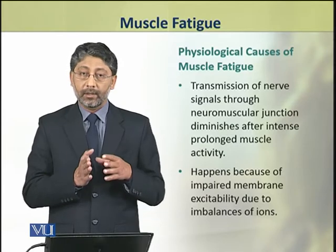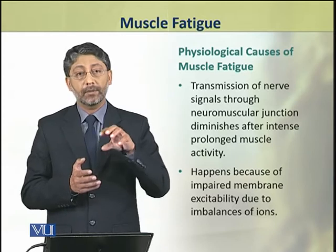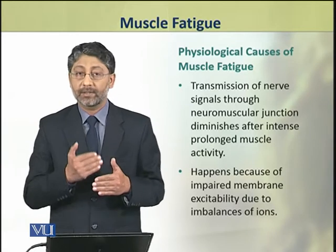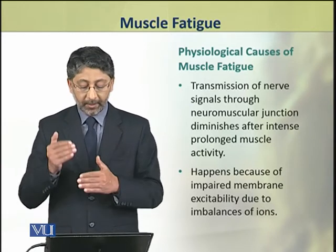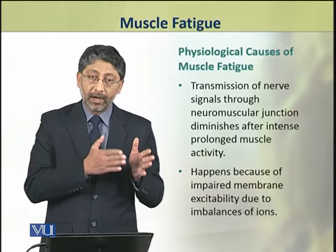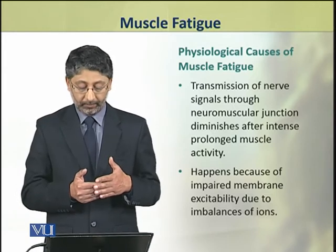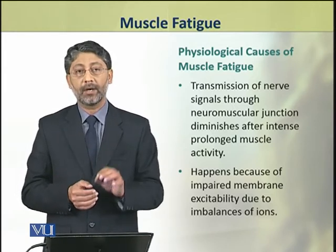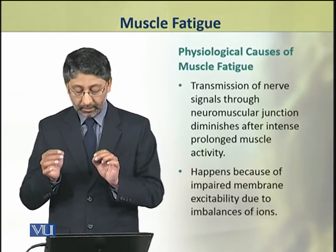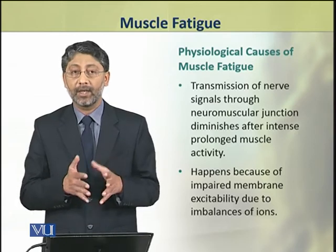First, we shall discuss that the transmission of nerve impulses is affected by activity. Because when the nerve impulses are prolonged, they become slow. This happens because of ion imbalances, and as a result, impairment of excitability of the membrane occurs.